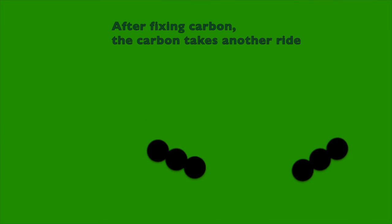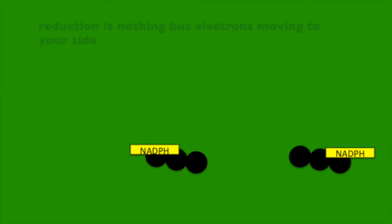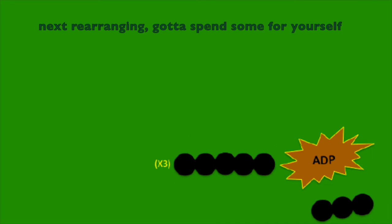After fixing carbon, the carbon takes another ride, producing nothing but electrons are moving to your side. Next we rearrange it, out to spend ATP ourselves, sugars created.